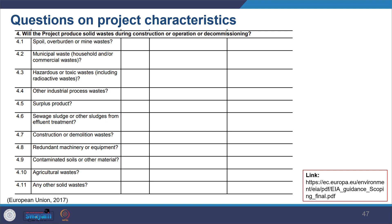The checklist also covers solid waste during construction, operation, or decommissioning stages — including spoil, overburden or mine waste, municipal waste, hazardous or toxic waste, industrial process waste, surplus products, sewage sludge, construction or demolition waste, redundant machinery or equipment, contaminated soils, agricultural waste, and any other solid waste. For each you note: yes or no, characteristics of the project environment affected, and significance of the impact.